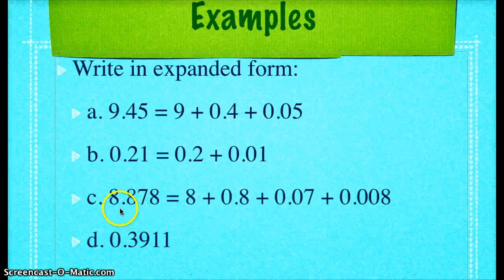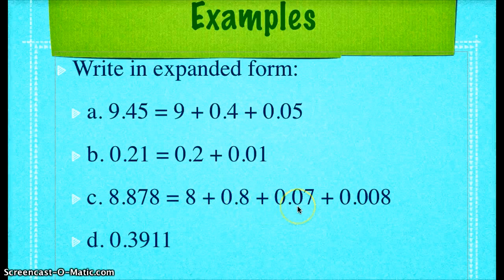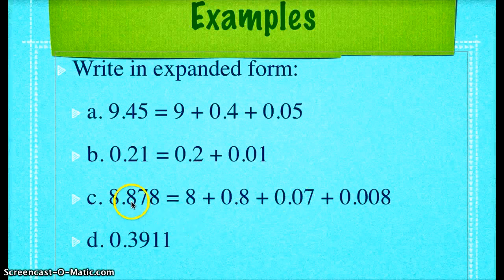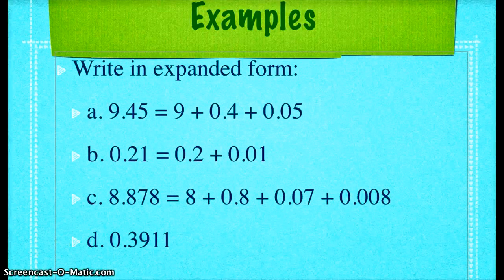This number, 8 and 878 thousandths, can be rewritten as 8 plus 8 tenths plus 7 hundredths plus 8 thousandths. Here I've replaced the first 8 right here, the first 8 in the decimal with a zero. And here I've replaced the 8 seven with two zeros. All of these numbers are still in their original place.